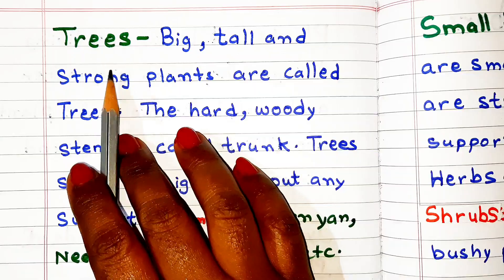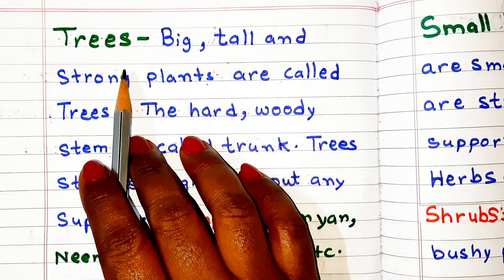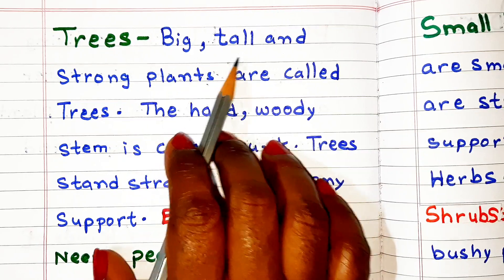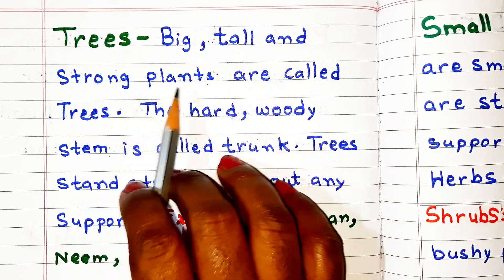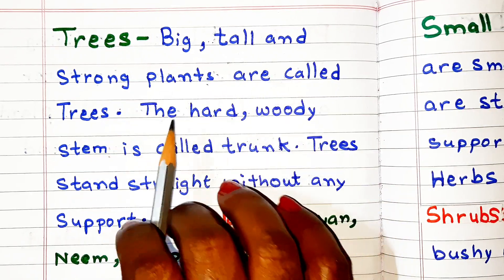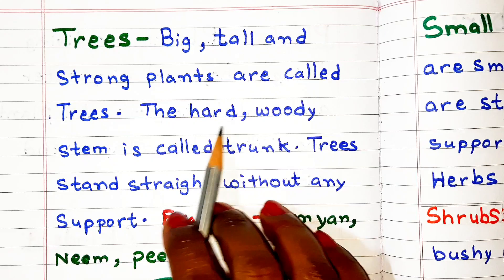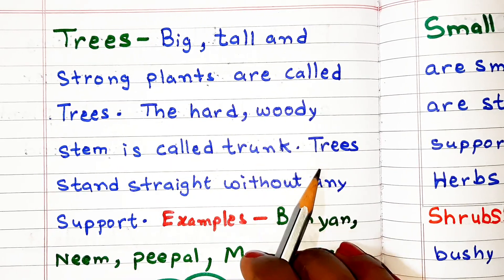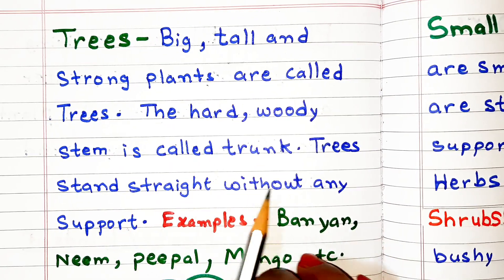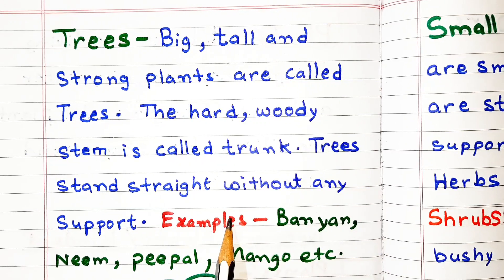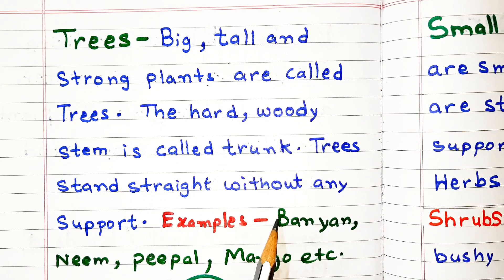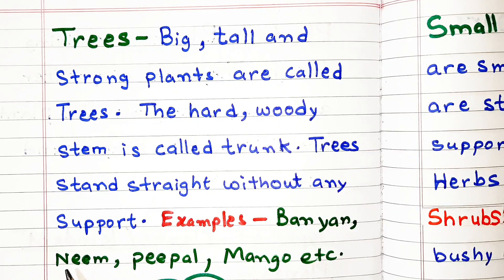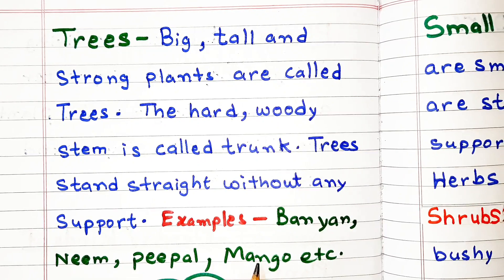Let's learn about trees. Big, tall, and strong plants are called trees. The hard woody stem is called the trunk. Trees stand straight without any support. Examples of trees are banyan tree, neem tree, peepal tree, mango tree, etc.